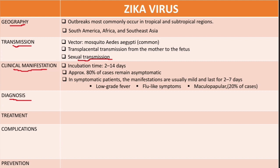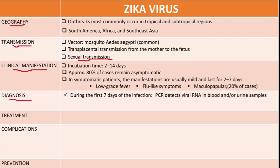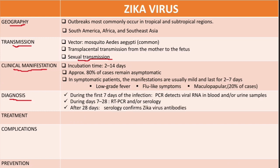For definitive diagnosis, during the first seven days of infection we can use PCR to detect viral RNA in blood or urine samples. During days 7 to 28, reverse transcription PCR or serology can be used. After 28 days, serology is used to confirm Zika virus antibodies.